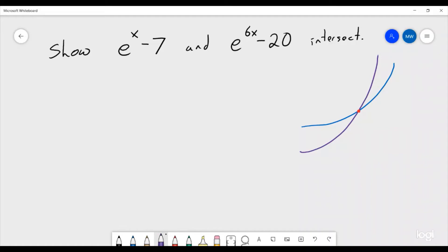So let's say that f(x) is equal to (e^x - 7) minus (e^(6x) - 20). So in other words, what this is measuring is this distance.